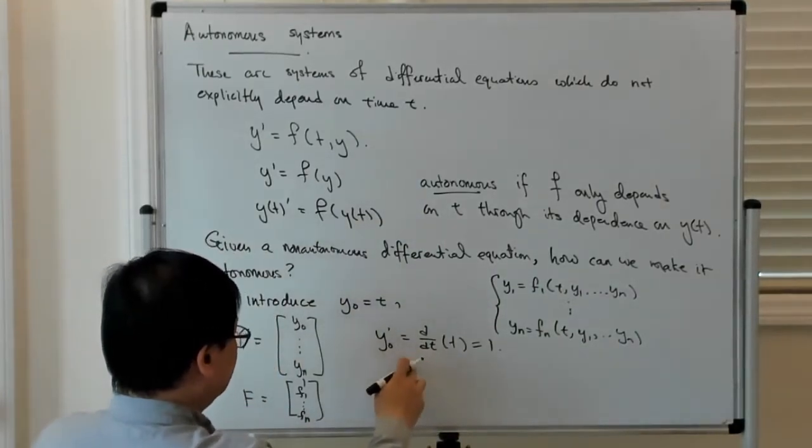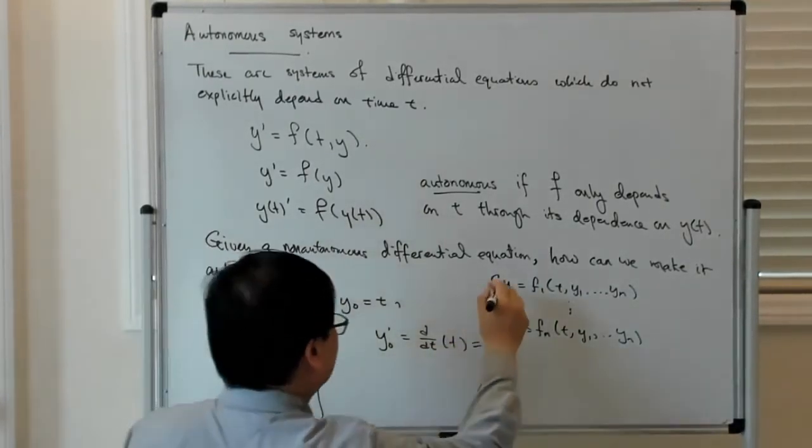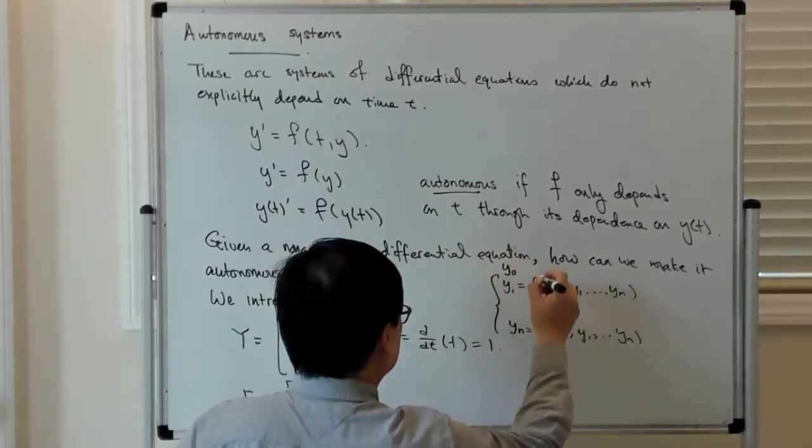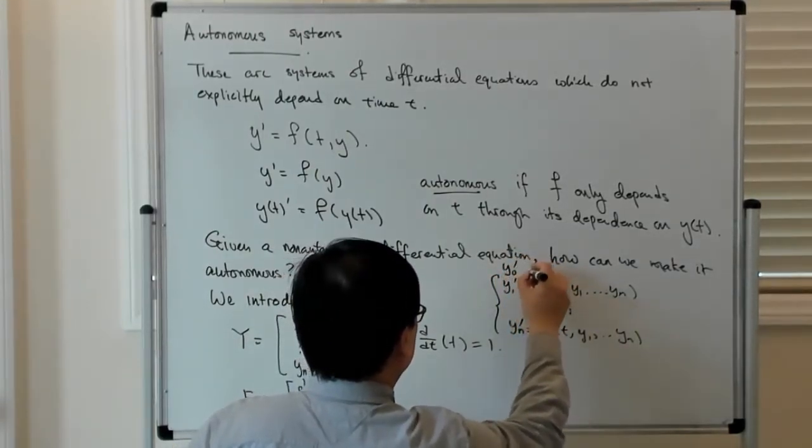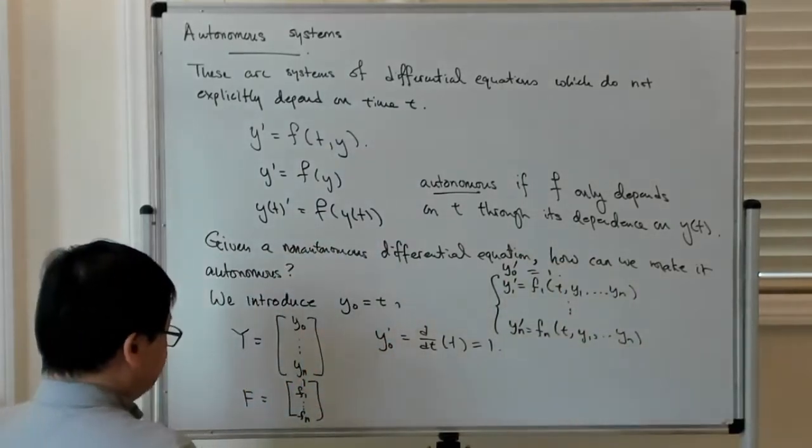And you augment to that an equation which says y0 prime is equal to 1, so that differential equation is fairly simple. So f can be given by 1, f1 to fn.